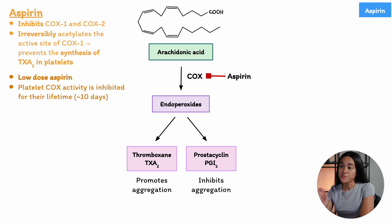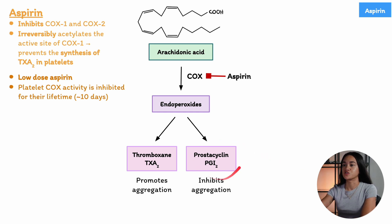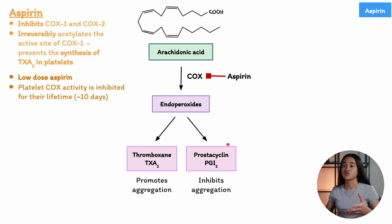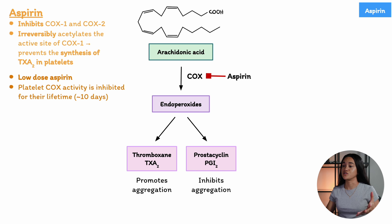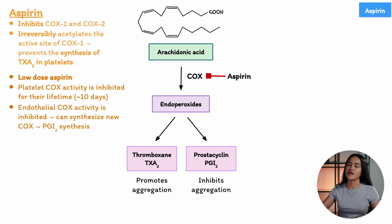Another product of COX-1 is prostacyclin, which is produced in endothelial cells — complete cells with nuclei that have the ability to regenerate cyclooxygenase. So while aspirin reduces COX-1 activity in endothelial cells initially, those cells can eventually produce new cyclooxygenase, allowing them to continue generating prostacyclin, which reduces platelet activation.